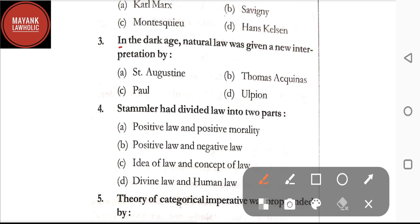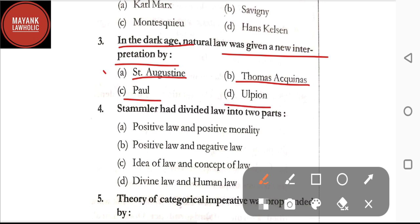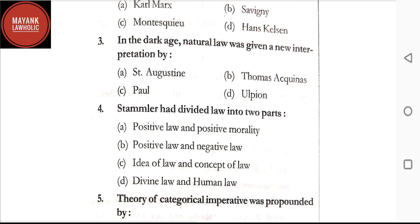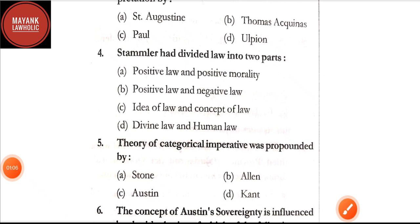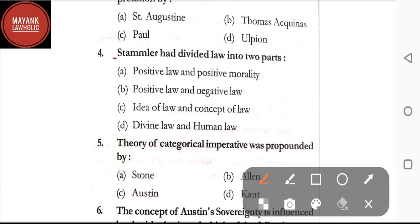Question number three: in the dark age, natural law was given a new interpretation by — option A: Saint Augustine; option B: Thomas Aquinas; option C: Paul; option D: Ulpian. The correct answer is option A, that is Saint Augustine. In the dark age, natural law was given a new interpretation by Saint Augustine.